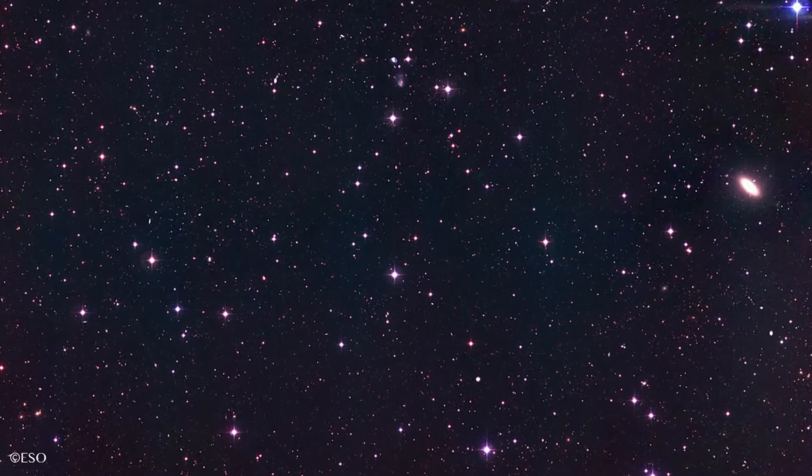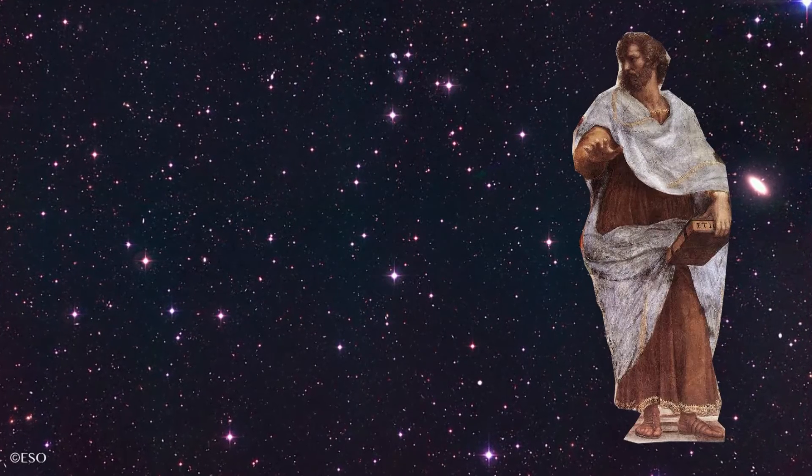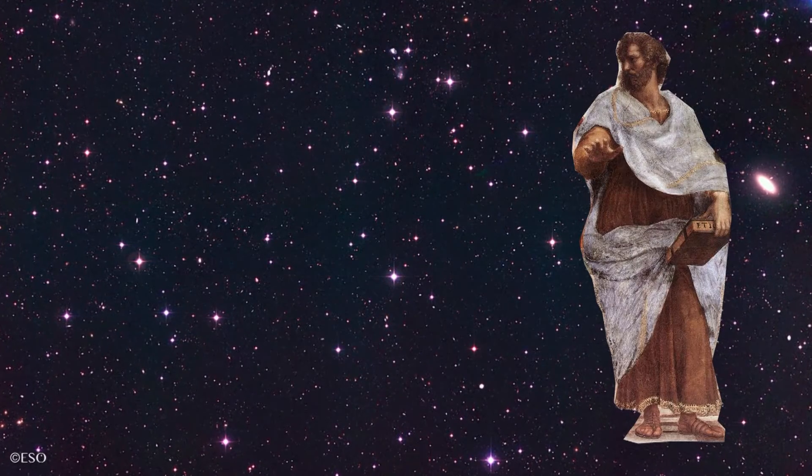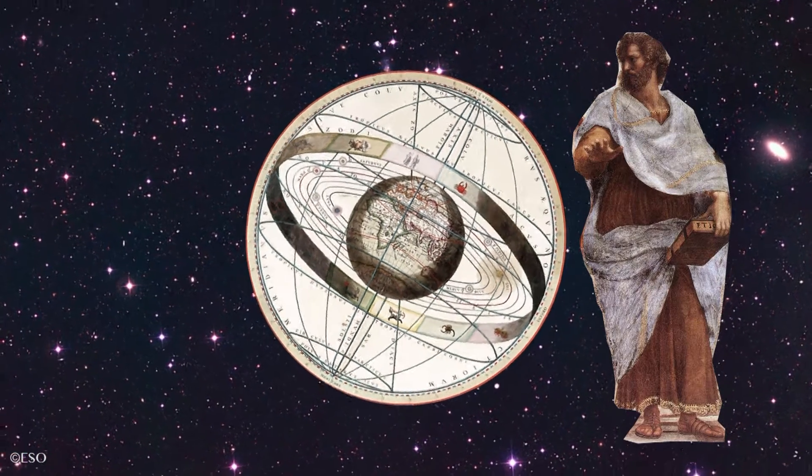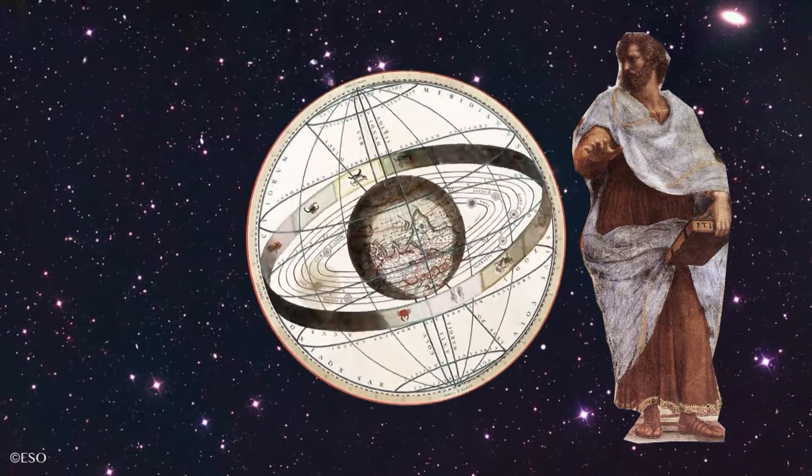The stars. Aristotle could see these, and his conception of the universe placed Earth firmly at the centre. These heavenly bodies, moving circularly above, were just doing it because it was natural. Everyone loved Aristotle, and thought he was the bee's knees. Especially the church.